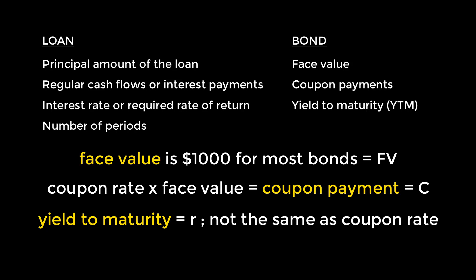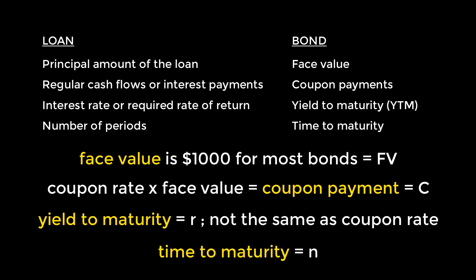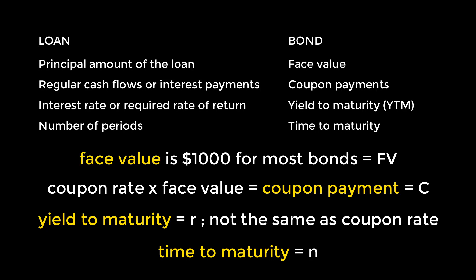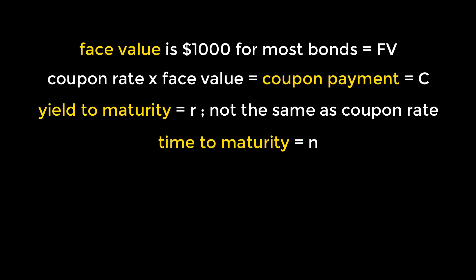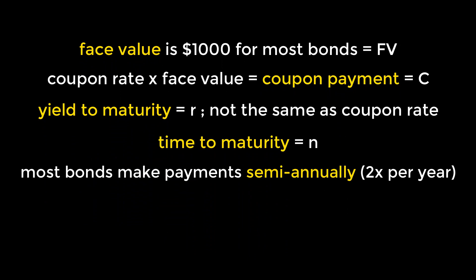Bonds have a specified length of time, or number of periods, for which they last. In bond jargon, that's called the time to maturity. The final day of the life of the bond is called the maturity date, on which the issuer has to pay back the bond holder the principal and interest amounts. It's worth mentioning that the majority of bonds make payments semi-annually. This would affect our number of periods, our yield to maturity, and our coupon rate. If payments are semi-annual, the number of periods is double the years to maturity, while the YTM and coupon rate would be halved.